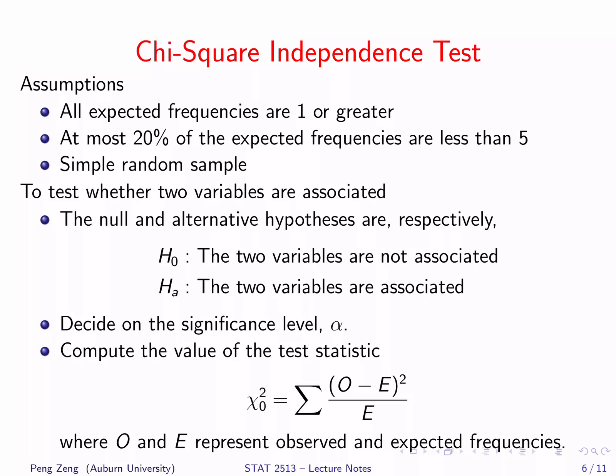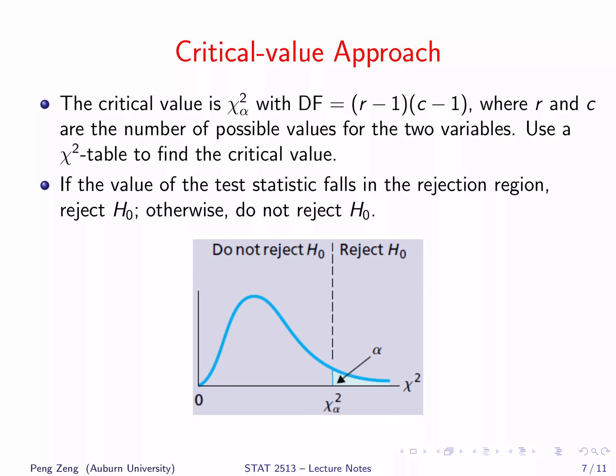Then we need to compute the value of the test statistic, denoted by chi-square zero. It is the sum of (O minus E) squared divided by E, where O and E represent observed and expected frequencies. We can draw a conclusion using either the critical value approach or the p-value approach. First, make sure that the degrees of freedom is (R−1) times (C−1).